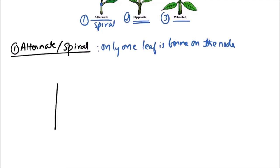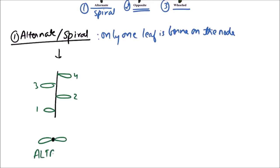In this example of alternate or spiral phyllotaxy, we have the first leaf, second leaf, third leaf, and fourth leaf. If we observe from the top, we will see that the first will be overlapped by the third, then the fifth, then the seventh; and the second will be overlapped by the fourth, sixth, and so on. So there are two vertical rows of leaves observed from above — this type of phyllotaxy is known as alternate phyllotaxy.